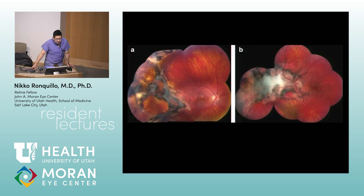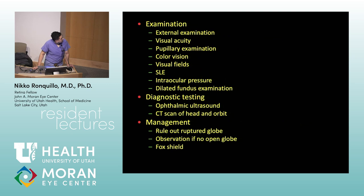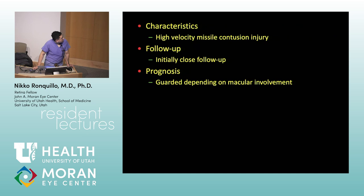History of trauma — let's say a gunshot wound. This is called sclopetaria. The typical boards question: what is the mechanism of sclopetaria? It's high velocity impact — shock waves. It's not direct impact; it's the shock waves from the projectile. That's sclopetaria — high velocity, not contusion, but shock waves.